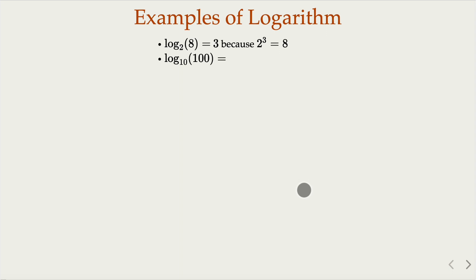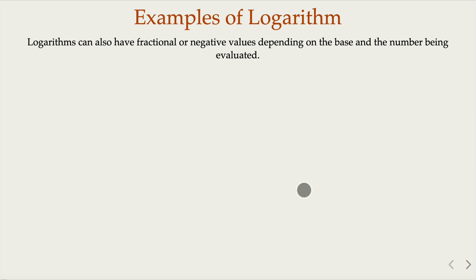How about log base 10 of 100? 10 raised to what power gives 100? The 2nd power. So that's 2. How about log base 5 of 125? 5 raised to the 3rd power gives 125. That would be 3. Notice that the value could be a negative or fractional value — it depends on the base and the number, which could give a negative 2.